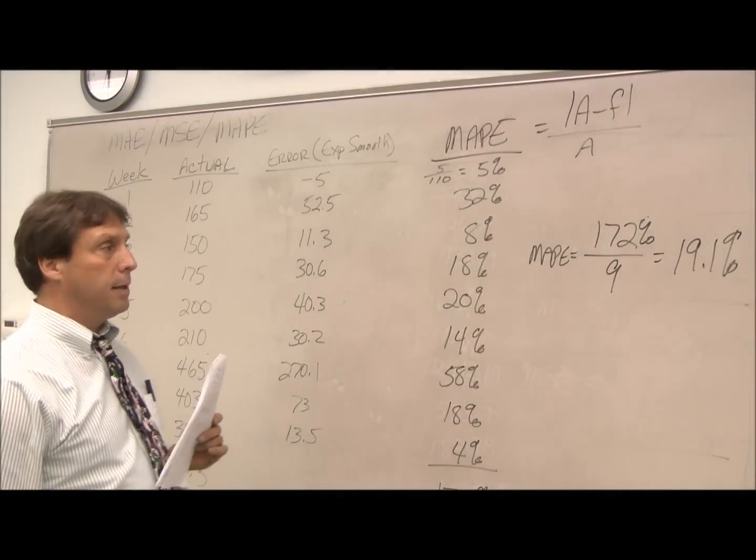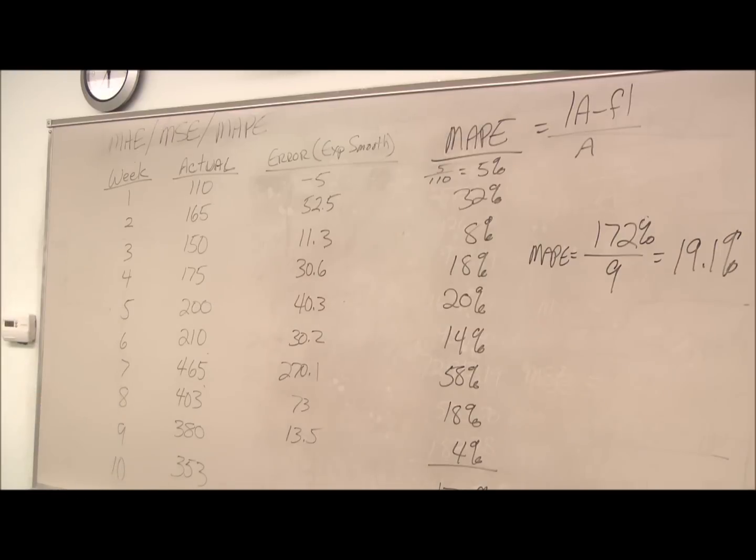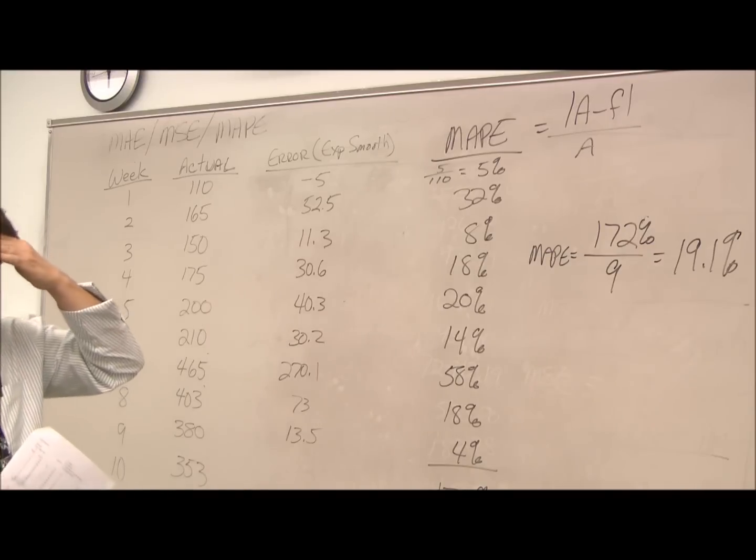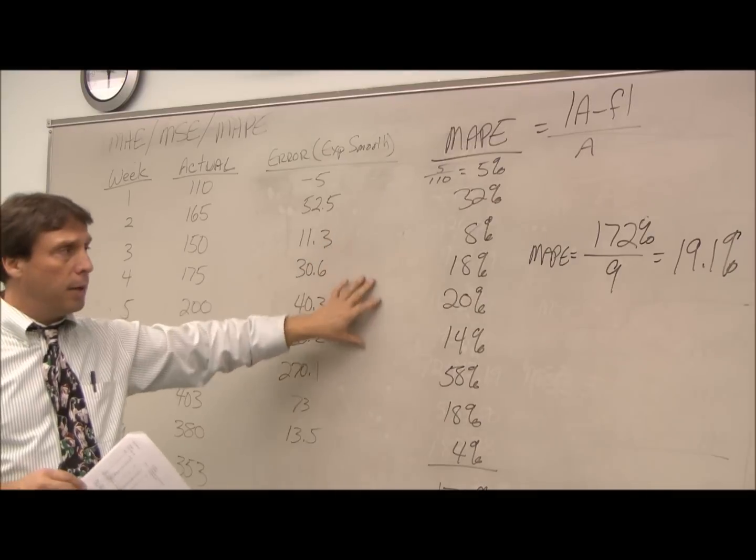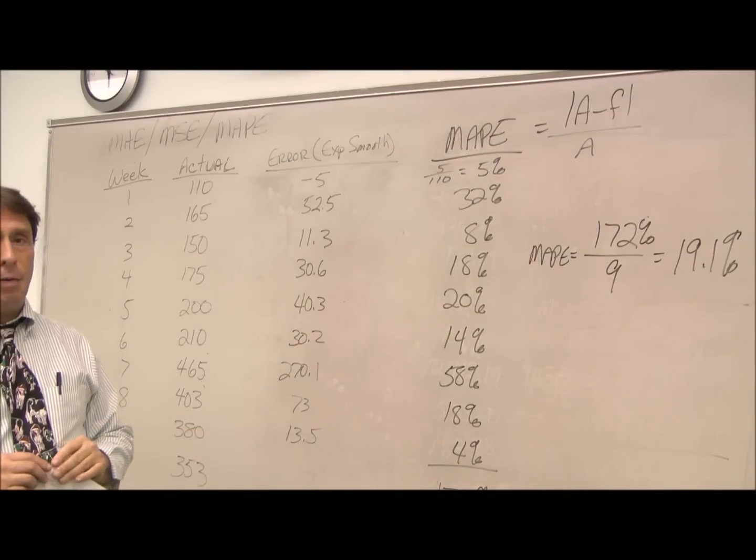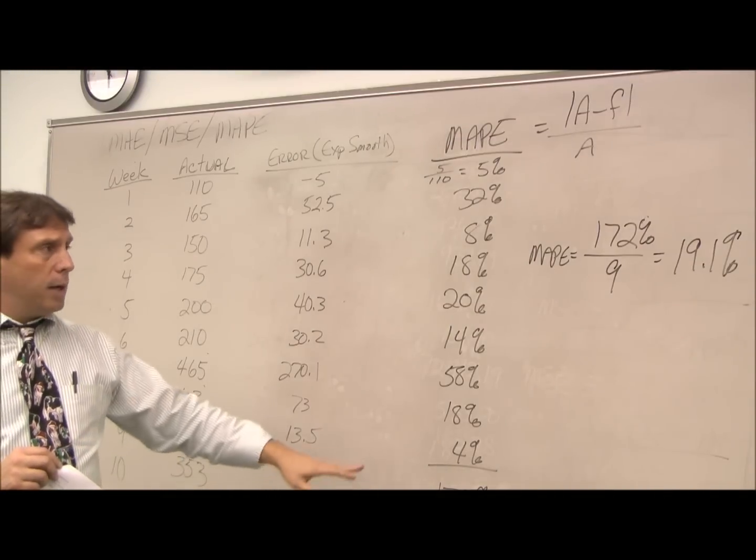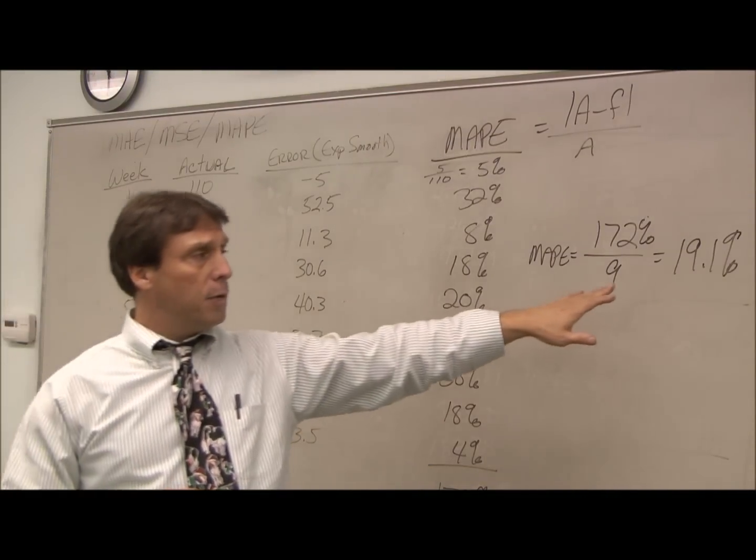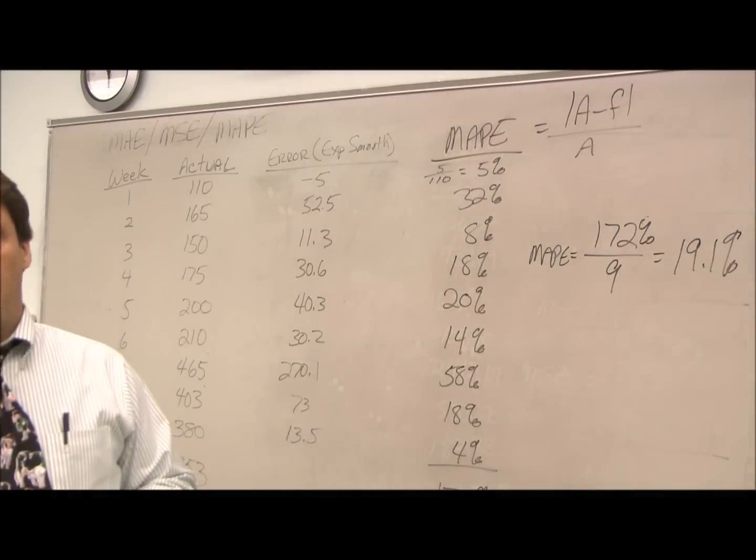So our forecast is within 19, or let's just call it 20%, which actually is a little high for a forecast. Now we can take all these forecasting methods and compare them to one another, all our different forecasts, see which ones give us the most accurate forecast, or we could use these forecasting numbers for comparing year-over-year forecasts.